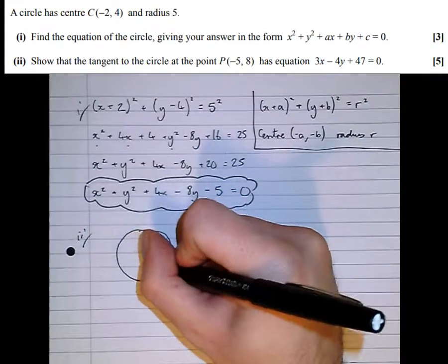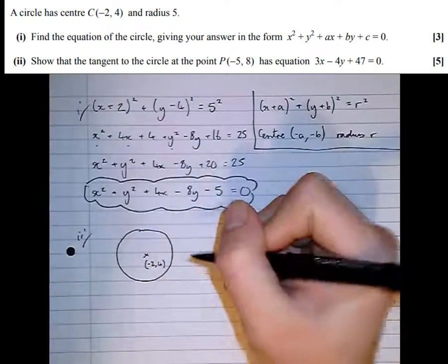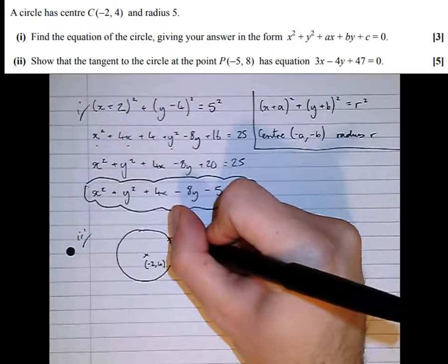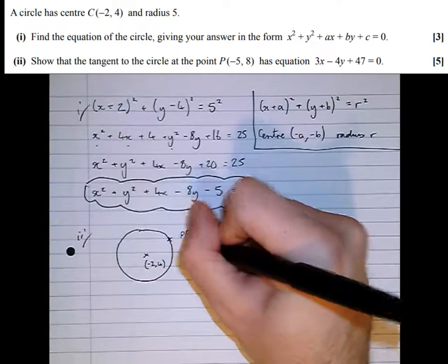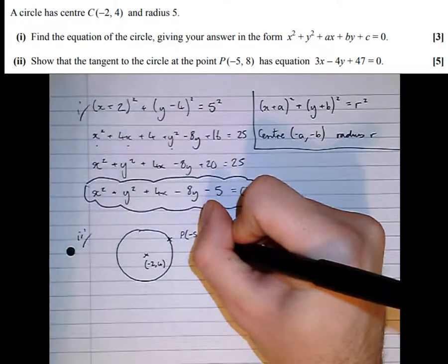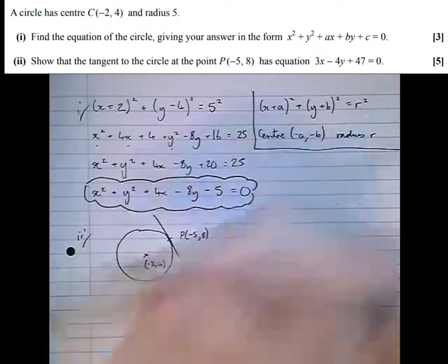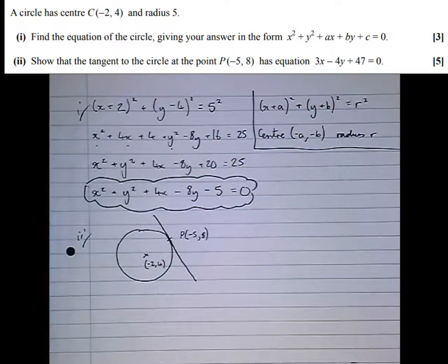I think a diagram is required to make the question clearer. We've got the centre at (-2, 4) and the point on the circle at (-5, 8). We need the equation of the tangent at this point on the circle, the equation of this line.